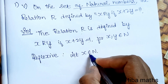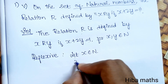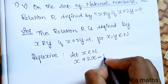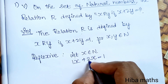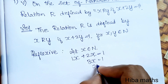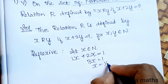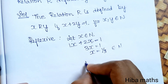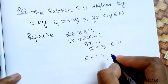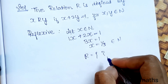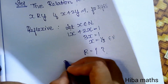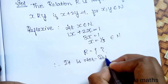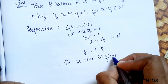Reflexive means x implies x itself. Let x be an element of natural numbers. Then, substituting y equal to x: x plus 2x equals 3x equals 1, so x equals 1/3. Since 1/3 is not a natural number, the relation R is an empty set. Therefore, it is not reflexive.